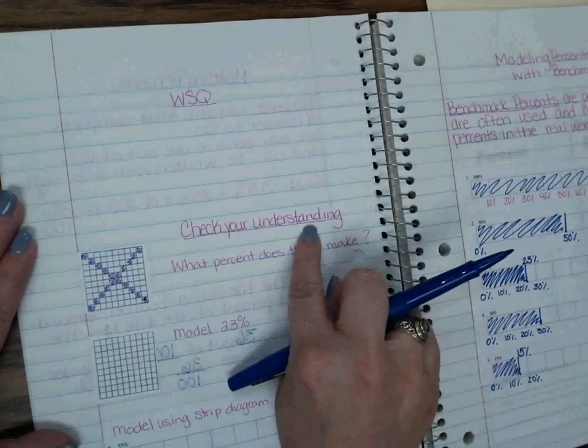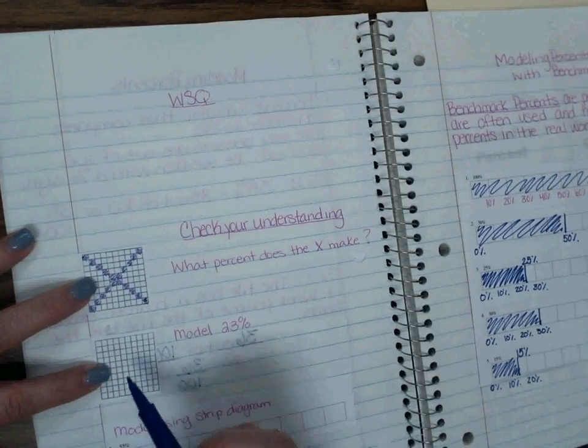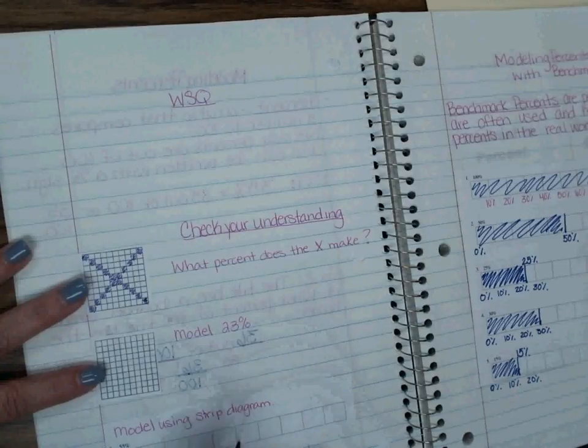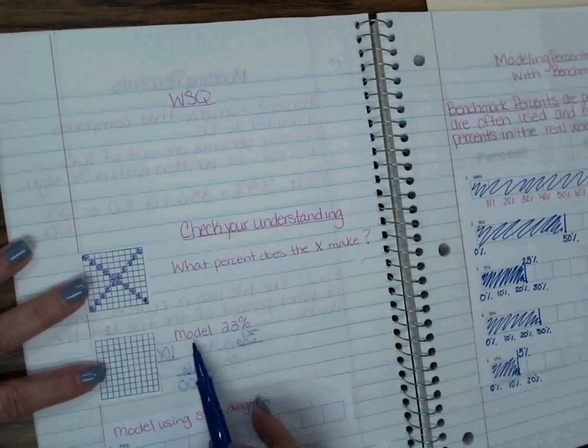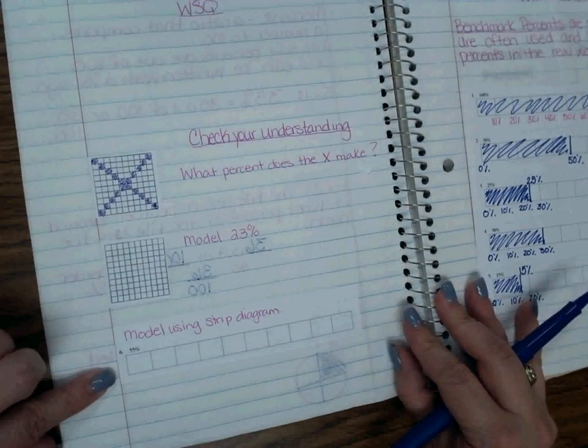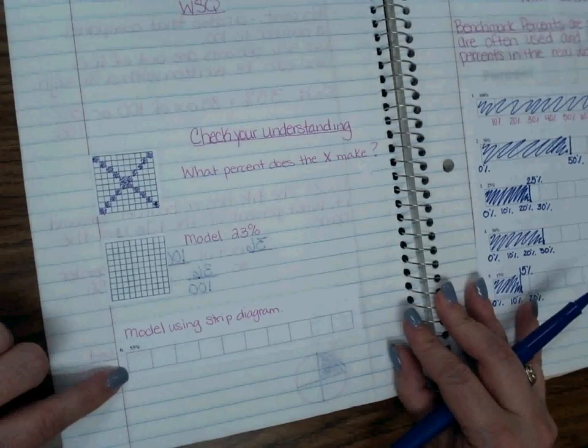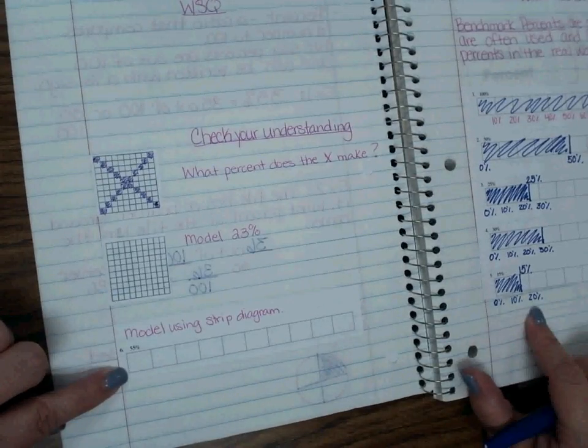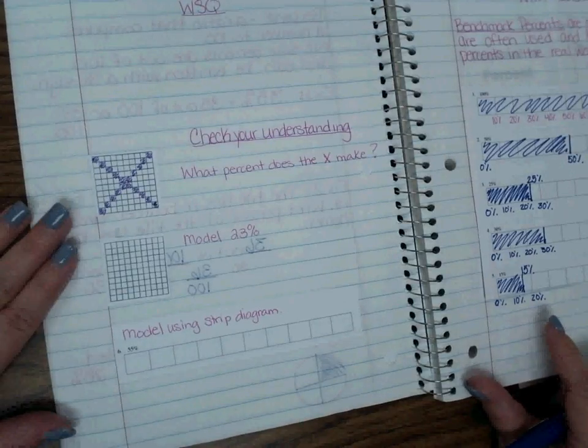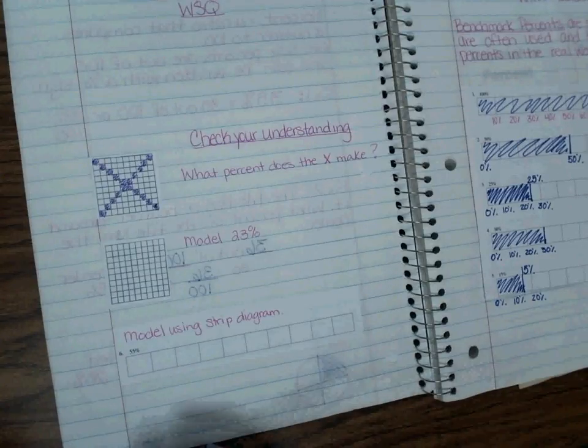So that's one part that you need to do. The other part is we need to check for understanding. So you have two extra grid pieces that you've been given. You need to paste these in. The first one, I want to know what percent does that X make of that grid? And the second one, I want you to model 23 percent. And then if you'll notice at the bottom, we have modeling using a strip diagram, it's asking for 55 percent. And you have your examples over here on this page. Make sure that you've gotten this all written down, that you complete this, and that you bring your INB back to class tomorrow. All right. Thank you.